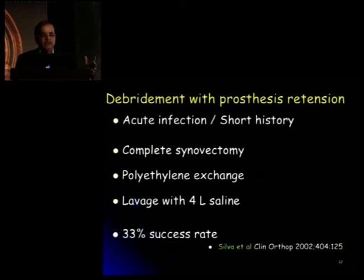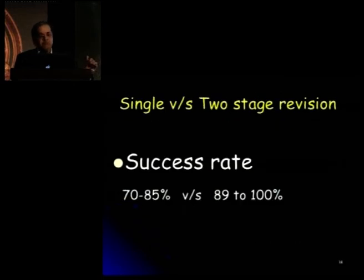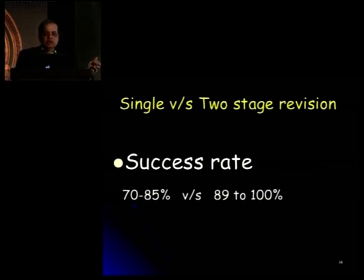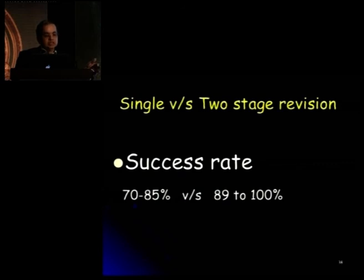Poly and liner exchange in the knee is common, requiring lavage with a lot of saline. There is approximately a 33% success rate reported in 2002. It ultimately boils down to single-stage or two-stage revision. There are very few centers in the world offering single-stage revision — the success rate quoted is anywhere from 70 to recently 90%, the main center following this being Endo-Klinik in Germany. Virtually everywhere else, people are cautious about single-stage surgery due to the risk of reinfection, because the success rate of two-stage revision is as high as 89 to 100%.